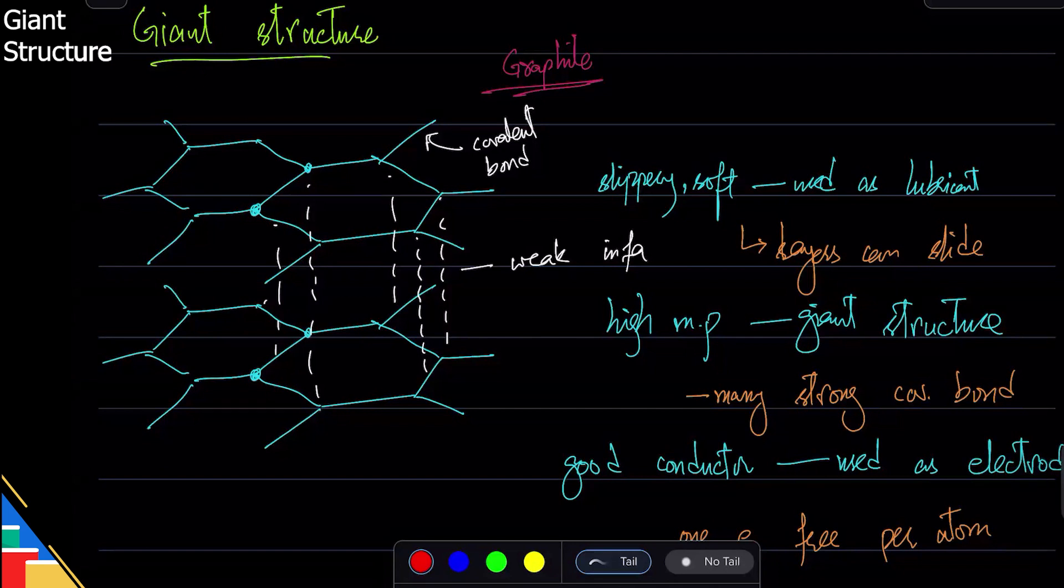We have graphite, which is a giant structure made by covalent bonding. Its properties: first of all it's slippery, it is soft, and it is so soft that we use it as lubricant. The reason for that is it has layers and these layers can slide.